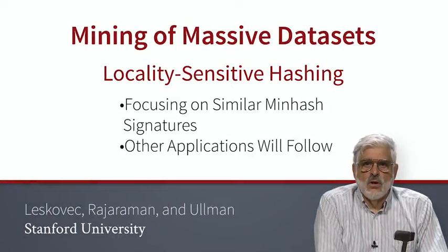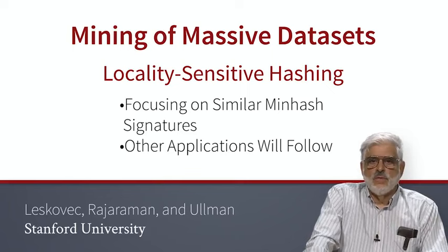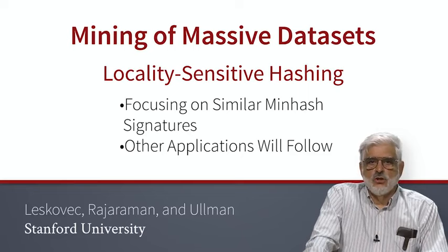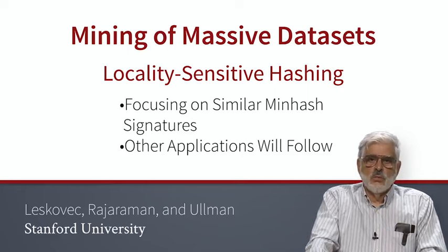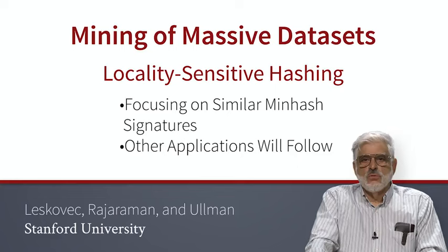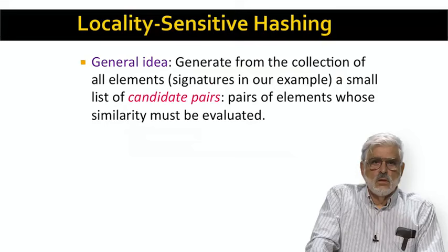Now we're ready to learn and apply locality sensitive hashing. We'll do this first for the special case of minhash signatures and later see the general LSH idea. We converted documents to sets of shingles, then converted those sets to short signatures consisting of vectors of integers. We can compare two signatures and estimate the Jaccard similarity of their underlying sets. Since signatures are relatively short, we can fit many into main memory and compare many pairs without repeatedly reading from disk.